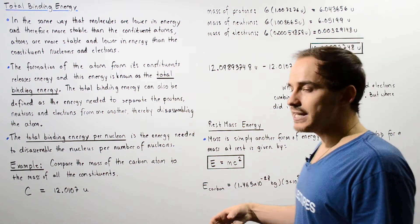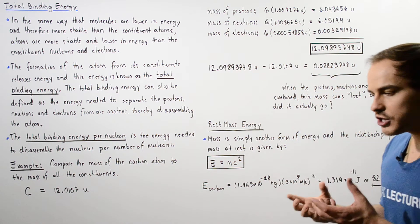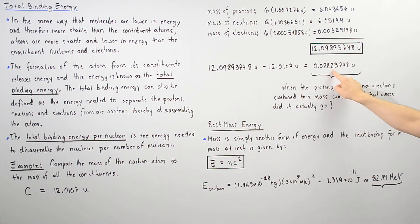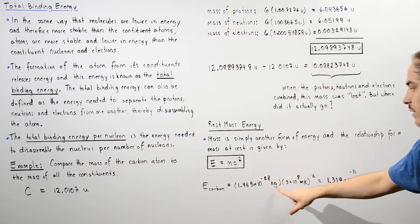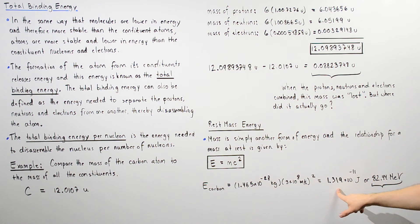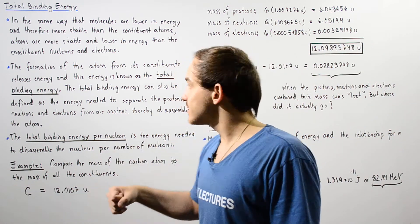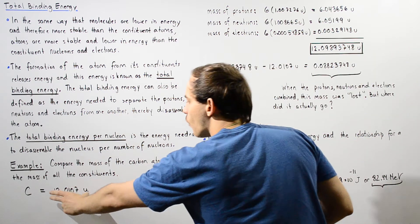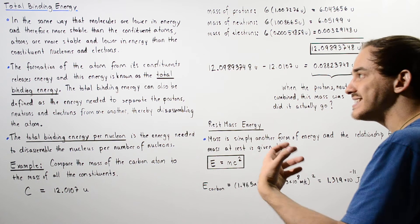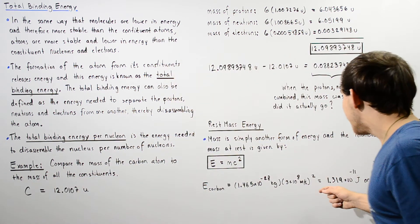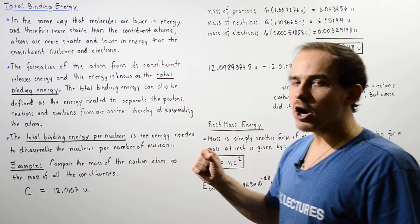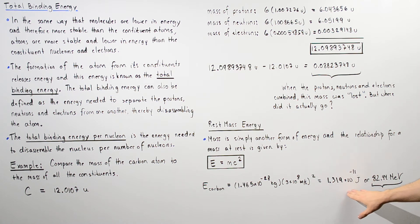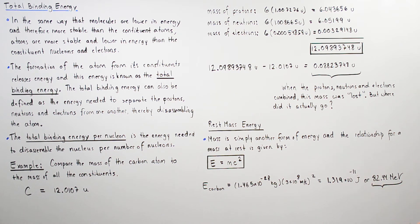Where C is the speed of light in a vacuum and M is the mass of our object in kilograms. If we take this mass value and convert it into kilograms, and then multiply it by the square of the speed of light, that will give us the amount of energy that was released — that is the total binding energy when the six protons, six neutrons, and six electrons combine to form our atom. Remember, the formation of an atom is stabilizing, and that means it releases energy. This is the amount of energy released when our carbon was formed. We can convert this into electron volts, and we see that this is equal to 82.44 mega electron volts.